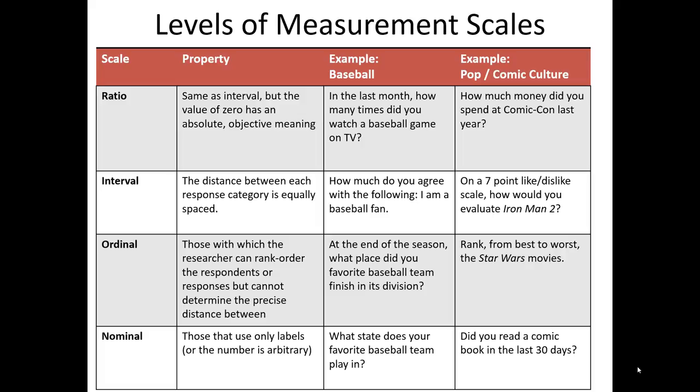Interval level data is different than ordinal because it still has order to it, but now those orders are equally spaced — so now we can do things like calculate averages and add them together. For example, if I asked how much you agree with the statement I am a baseball fan using a five-point scale, we would say that a score of five is one point greater than a score of four and two points greater than a score of three. If I said on a seven-point like-dislike scale, how would you evaluate Iron Man 2, and you answered six, I could say you scored exactly two points better than four, which is twice as much as if you had scored a five.